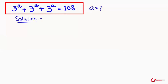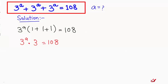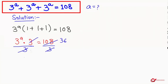In the first step, I'm going to take 3 to the power of a as a common factor. So we have 3 to the power of a times (1 plus 1 plus 1), equal to 108. That gives us 3 to the power of a times 3 equal to 108. Now this 3 is multiplying on the left, so it will be divided to the other side, and it cancels to give 3 to the power of a equals 36.